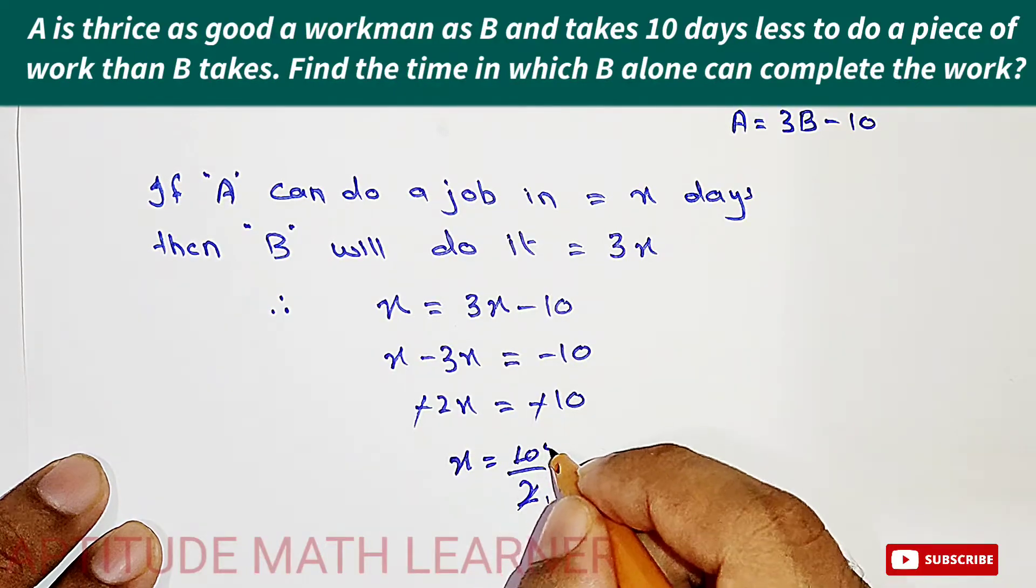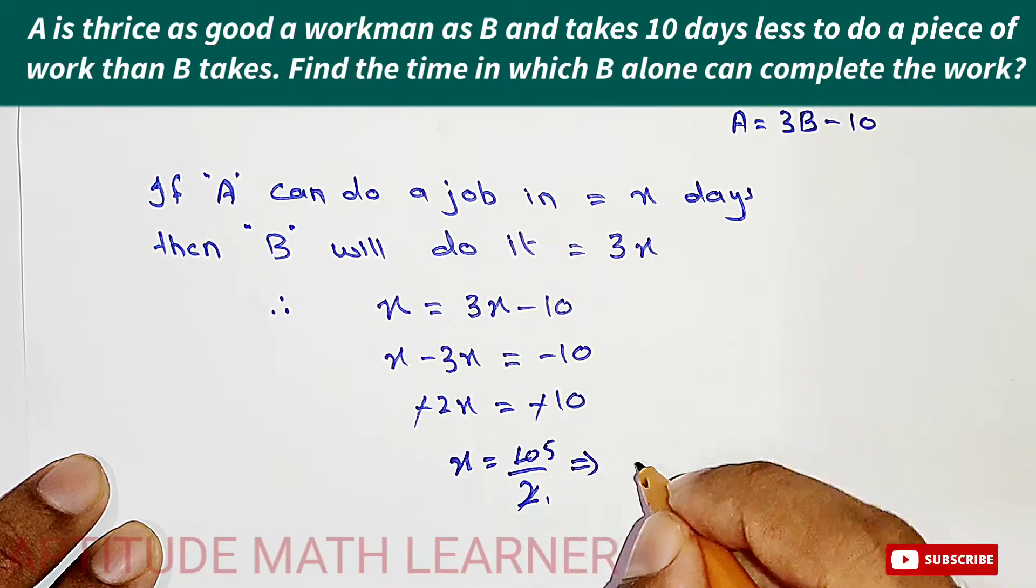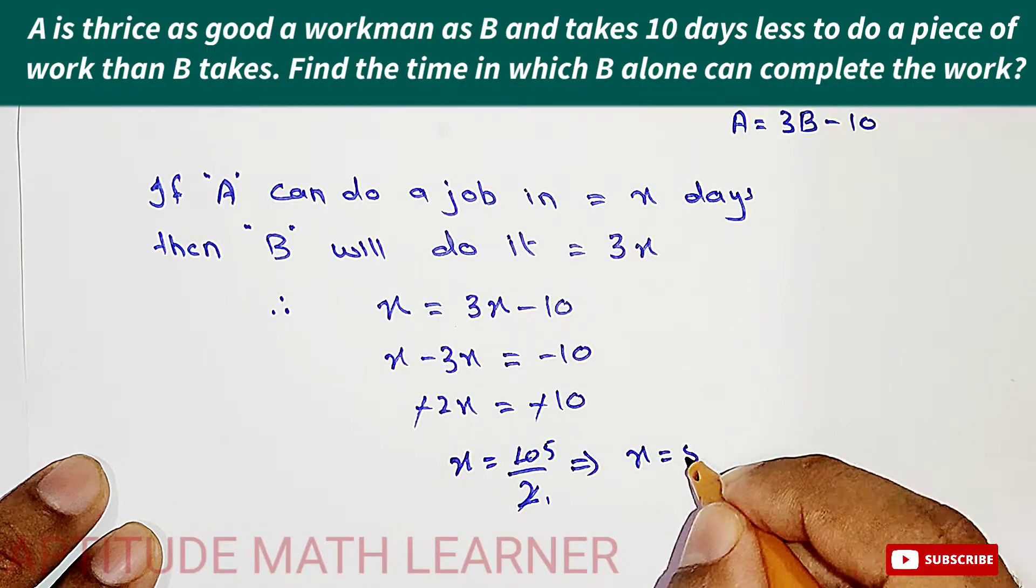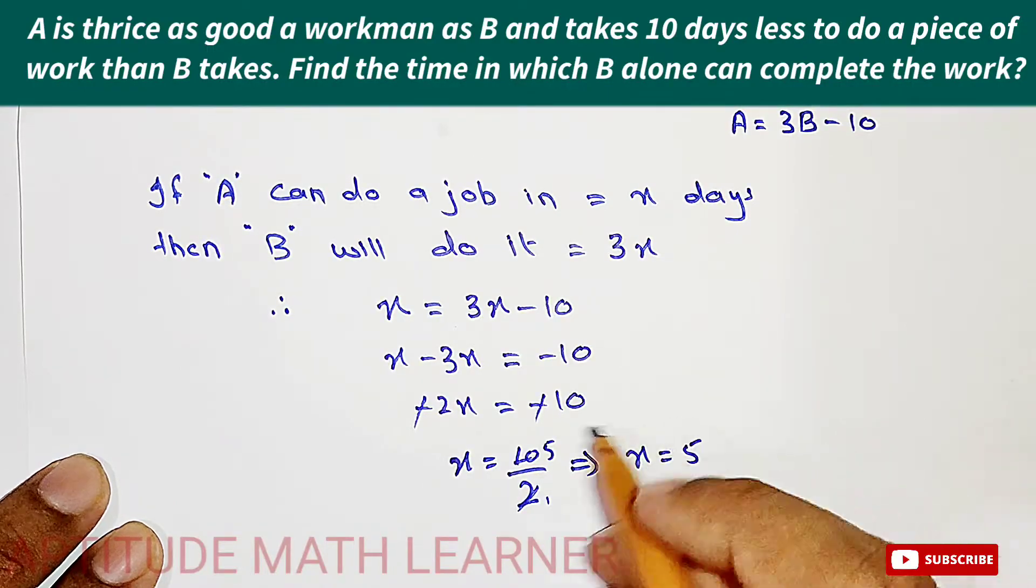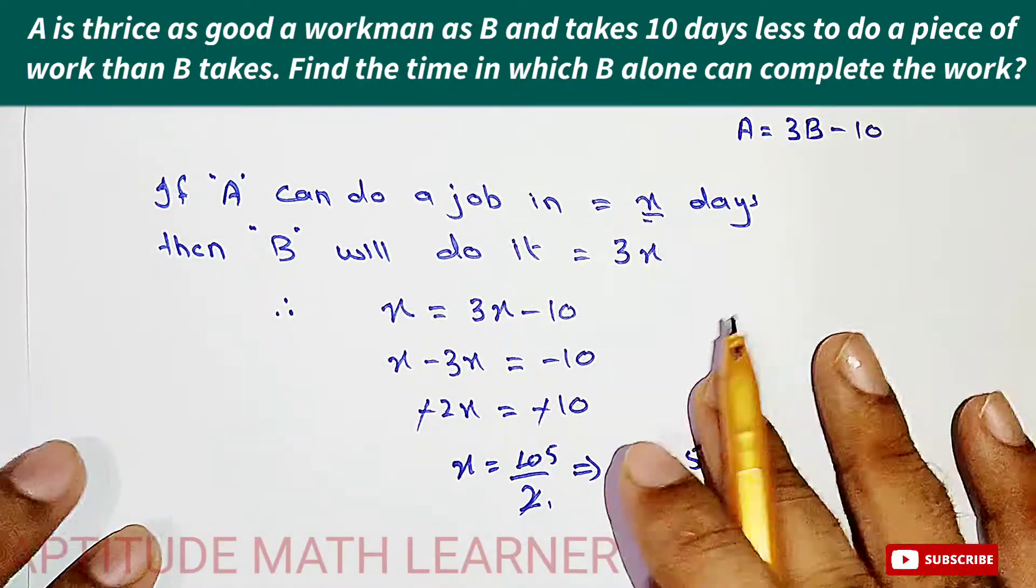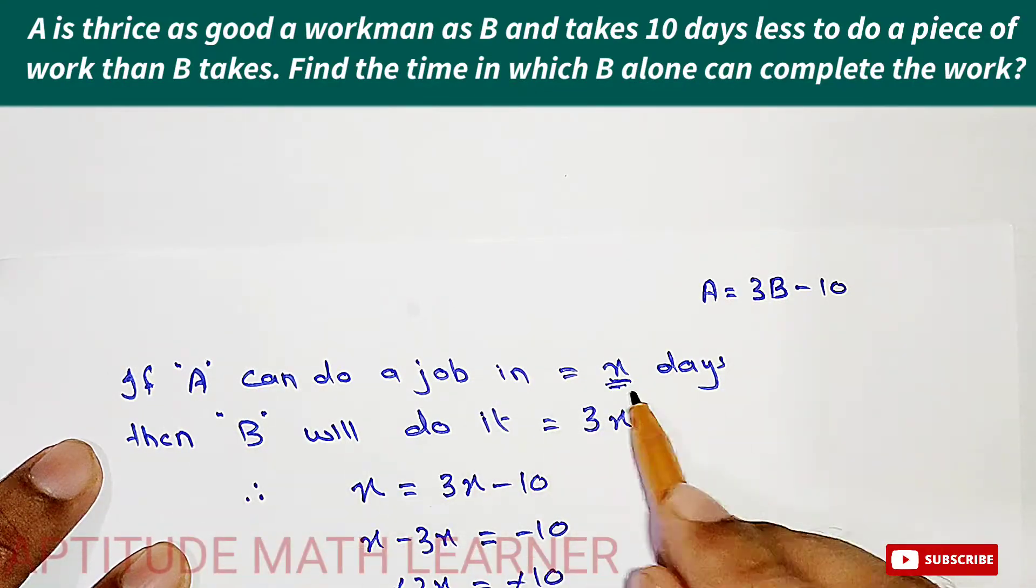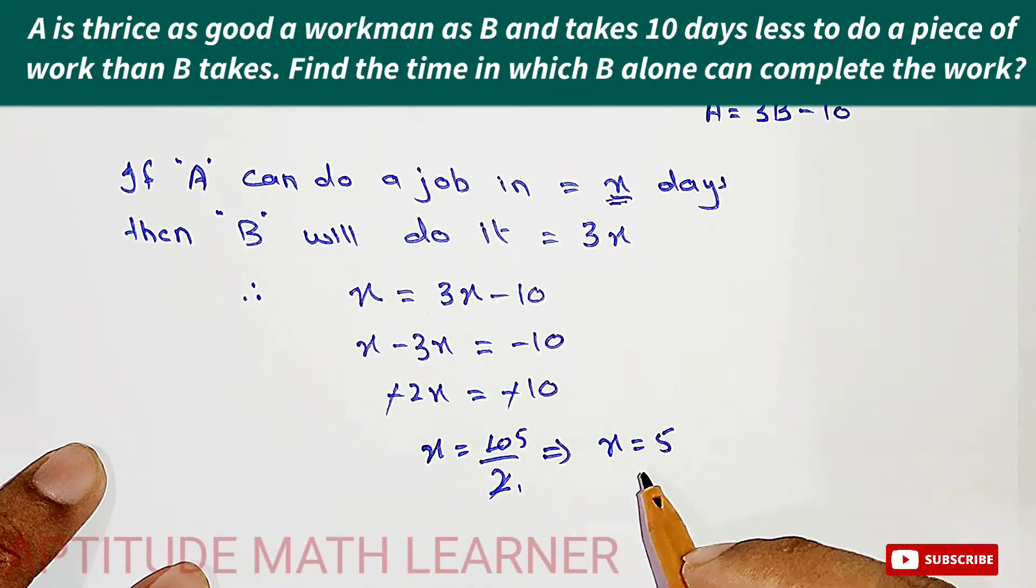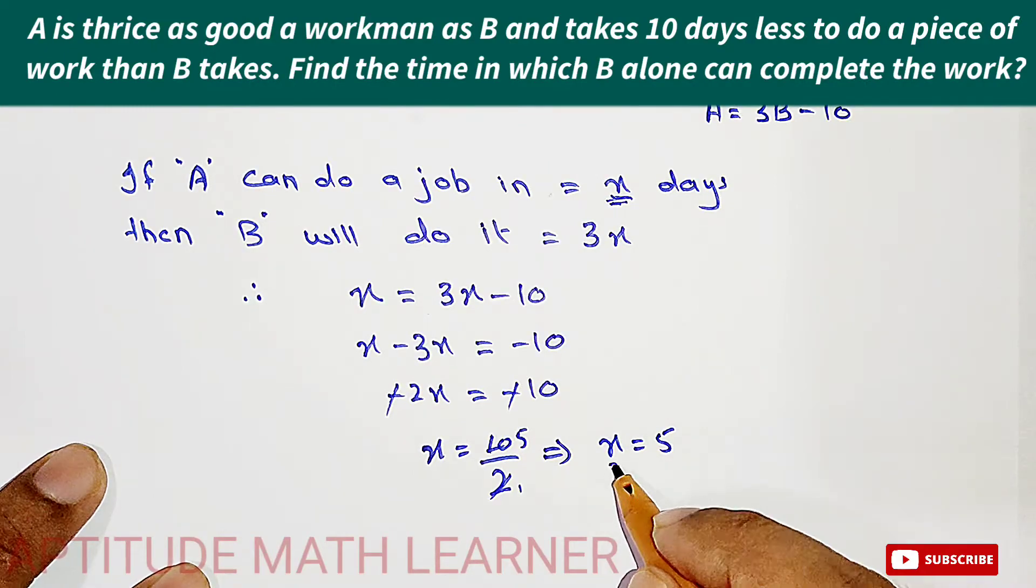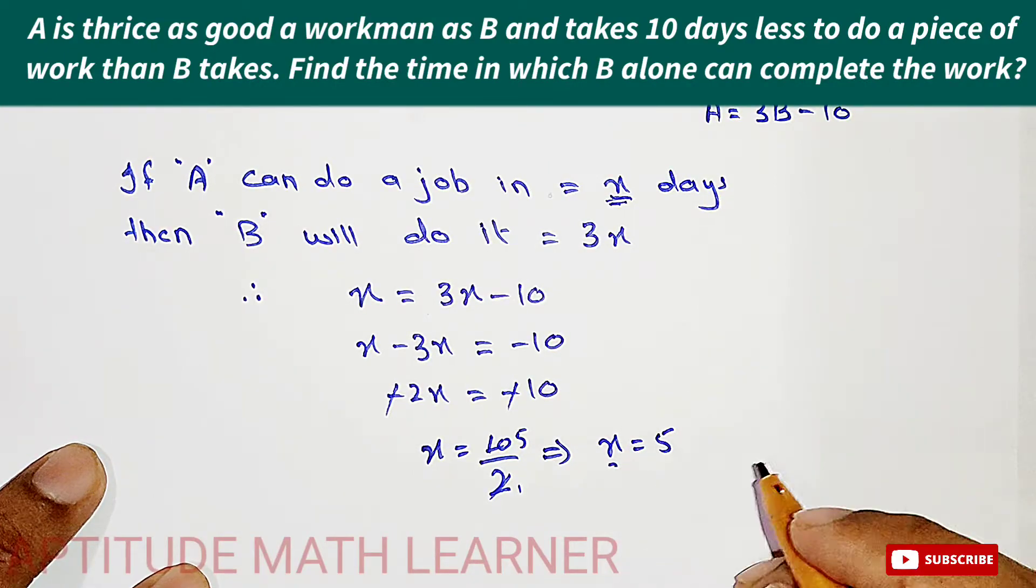So this means that x is equal to 5. So this x is the work which we have taken for A. So A can do in x days, and x here is 5 days.